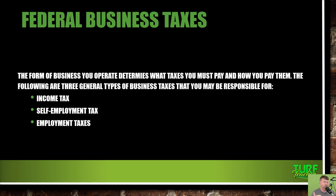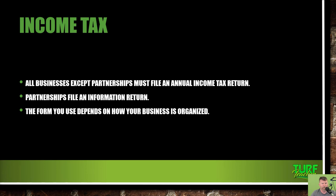With federal business taxes, the form of your business determines what taxes you must pay and how. The three general types: income tax (your company's income, which may pass through to your personal return if you're an LLC or S-corp; C-corps pay double taxation, which is why many elect Sub-chapter S), self-employment tax (FICA and Medicare for yourself), and employment taxes (what you must pay on behalf of employees, including matching their contributions).